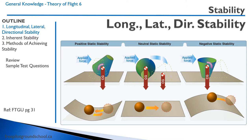Neutral stability — let's say we have a cup on its side. We move the cup and it really makes no difference. It's not going to go back, but it's not going to make things worse. It's like a ball rolling on a flat surface.